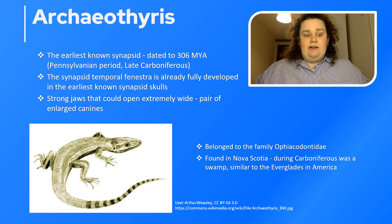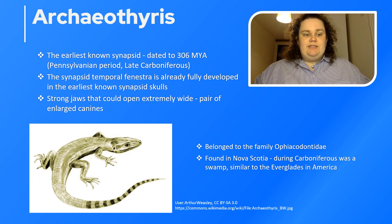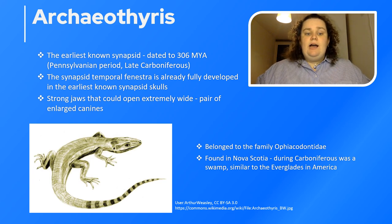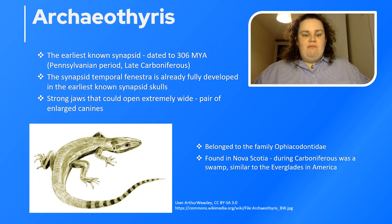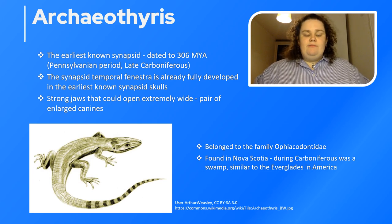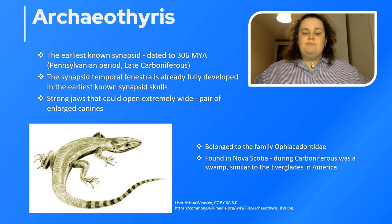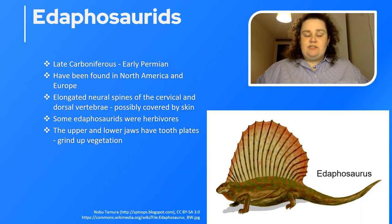Archaeothyris is the earliest known synapsid, dated to 306 million years ago in the late Carboniferous. In its skull we can see the synapsid temporal fenestra — already fully developed in this organism. It had strong jaws that could open extremely wide as well as a pair of enlarged canines. It belonged to the family Ophiacodontidae and was found in Nova Scotia, Canada. During the Carboniferous, Nova Scotia was a swamp similar in features to the Everglades in America.